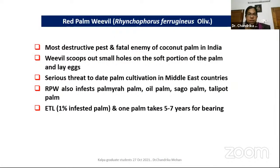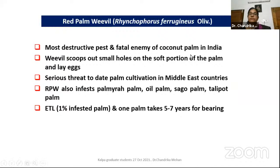The first major pest is the red palm weevil. The scientific name is Rhynchophorus ferrugineus. Throughout India in coconut cultivation, this pest is available. Rhynchophorus ferrugineus refers to the ferruginous color of the insect — a kind of metallic color. This is the most destructive pest and fatal enemy of coconut palm in India. It can kill the coconut palm by its infestation.